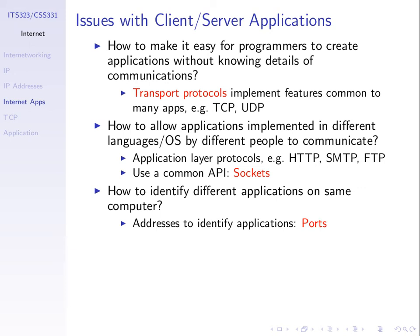When you program your own application to communicate across a network, you'd like to program it on any operating system using any language such that your client can talk to a server running on a different OS and different programming language. Having a common programming interface is useful, and there is one called the Sockets API. It allows a very simple interface for sending data between applications, common across different languages and OSes — we won't cover that here. The last thing we'll cover today is how to identify applications, and the answer is port numbers.